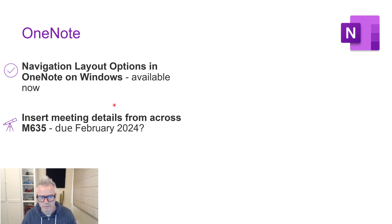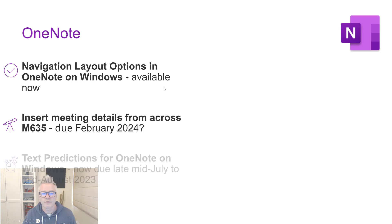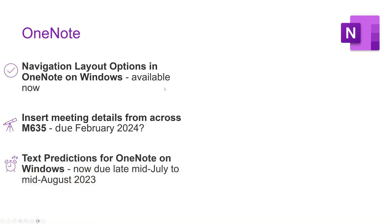I love using OneNote for meetings. Text predictions for OneNote on Windows: the ability for it to make a suggestion and you can press the right arrow or Tab to accept what it thinks you're going to type. That should be with us by mid-August.